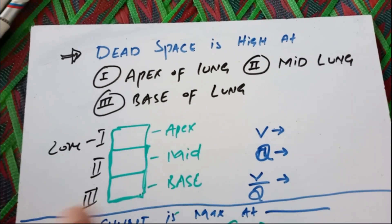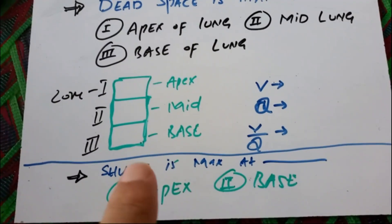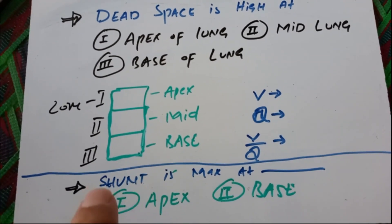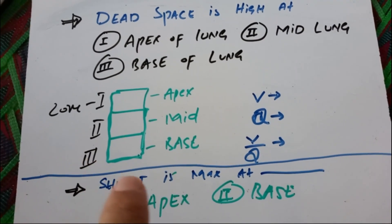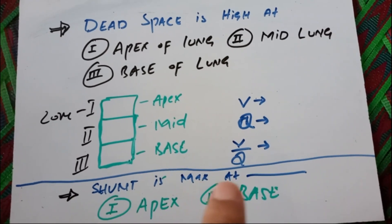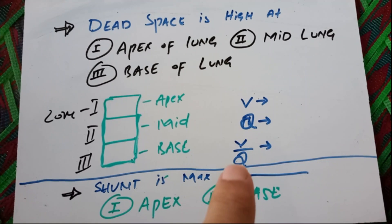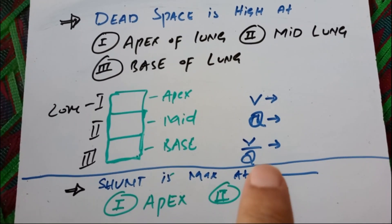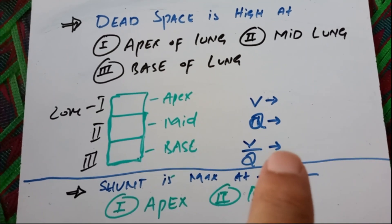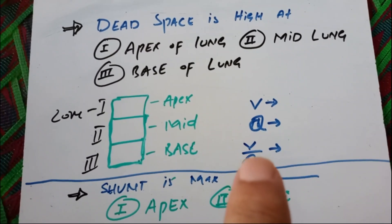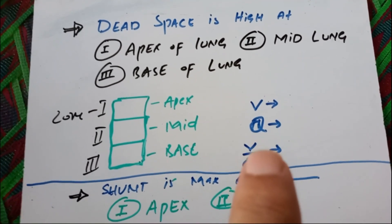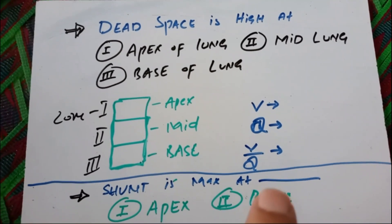Another MCQ: shunt is maximum at which zone — apex or base? The shunt is opposite to dead space. Shunt means blood is flowing without oxygenation, and that is at the base of the lung. Shunt is maximum at the base because V/Q is low at the base. When V/Q is low it means Q is more than V. So Q greater than V at the base means shunt is maximum there.